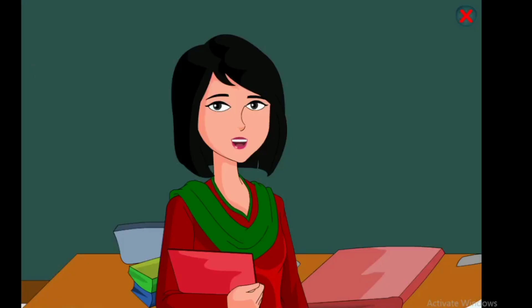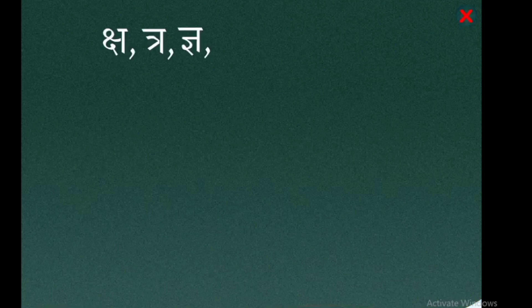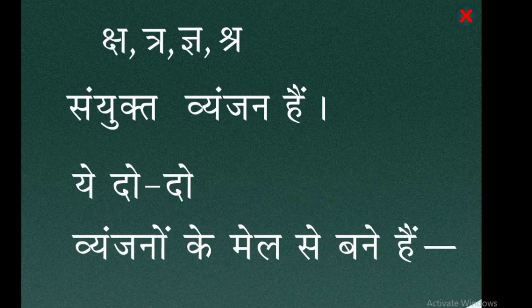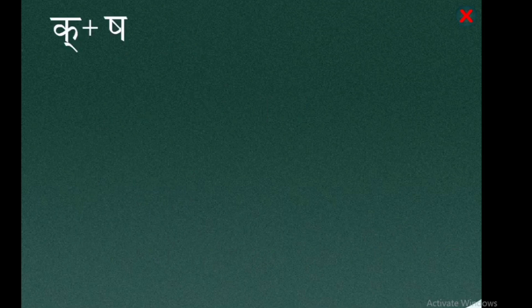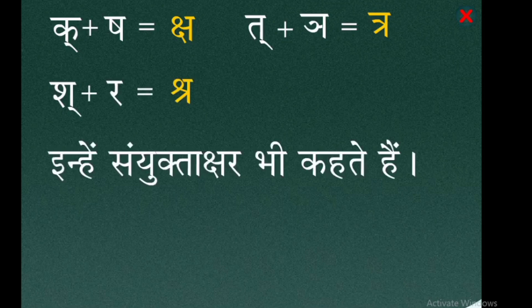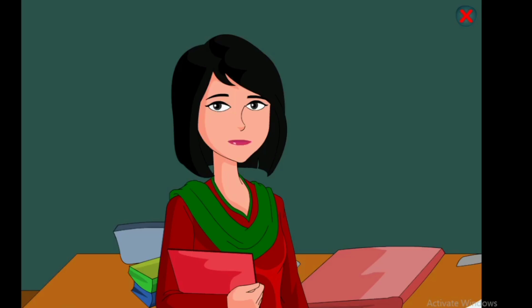Varnmala ke chart mein क्ष, त्र, ज्ञ, श्र — sanyukt vyanjan hain. Ye do-do vyanjnon ke mel se bane hain: क + ष = क्ष, त + र = त्र, ज + ञ = ज्ञ, श + र = श्र। Inhe sanyukt akshar bhi kehte hain. Samajh rahe ho na?